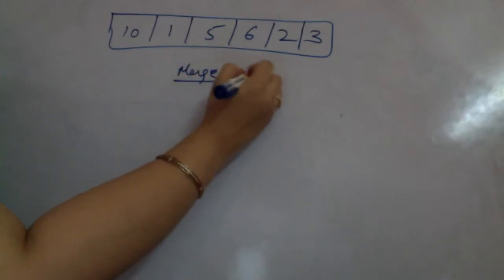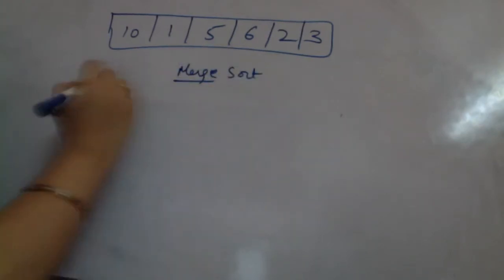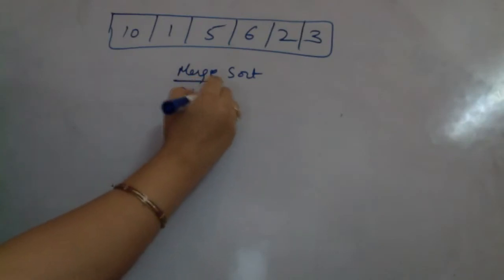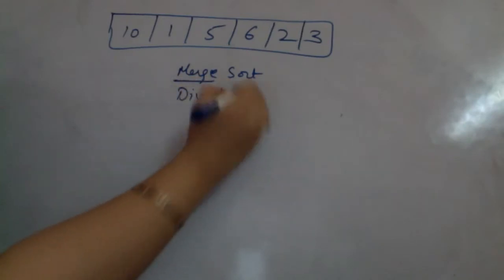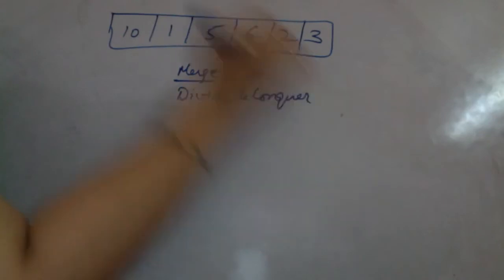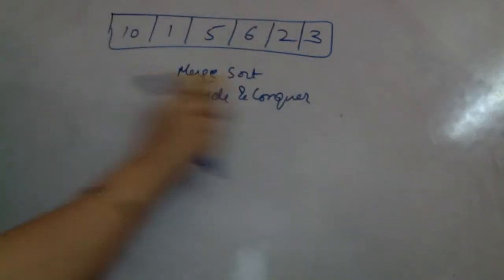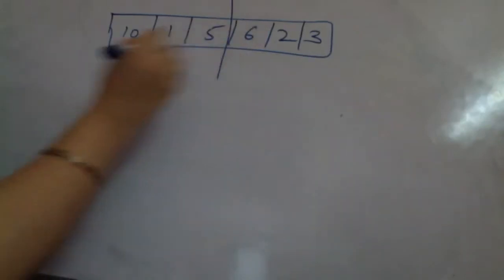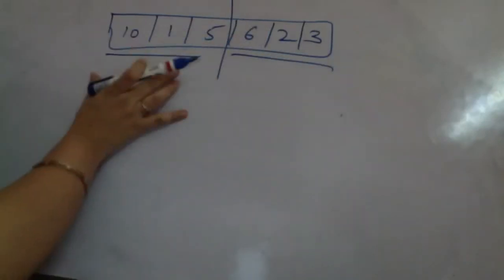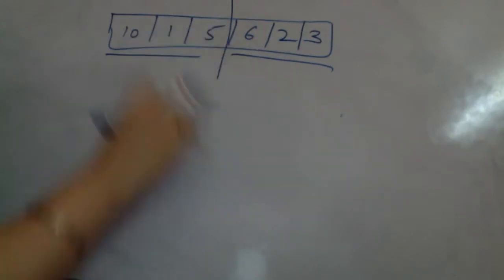What does the merge sort procedure do? It uses the same divide and conquer approach as we have used in binary search — we divide our problem into halves and then conquer. In merge sort, we divide the array into two halves, sort each half, and then merge the sorted arrays.